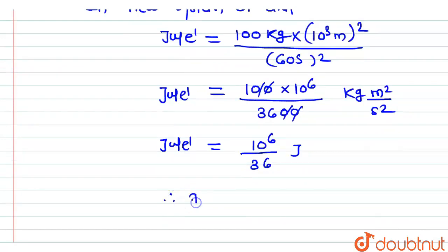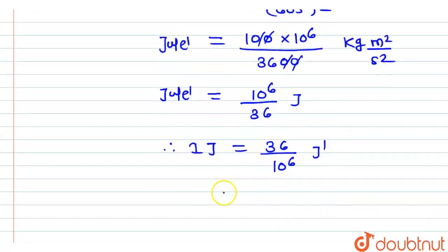Therefore, 1 Joule will be equal to 36 divided by 10 raised to the power 6 Joule dash, which means 1 joule is equivalent to 36 into 10 raised to the power minus 6 joule dash.